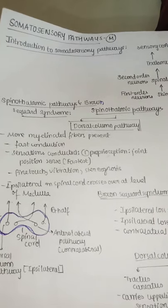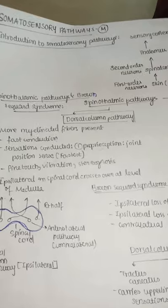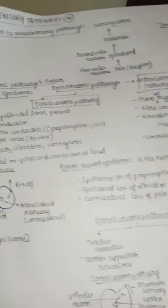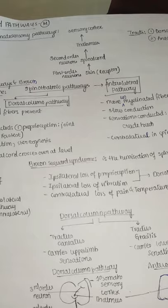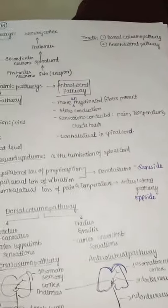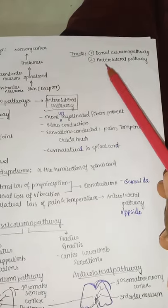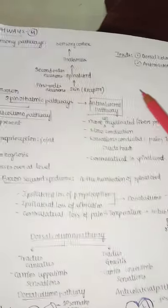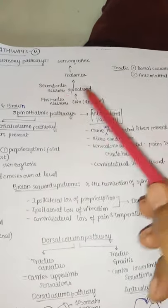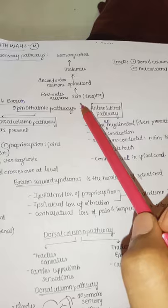Now let us continue with somatosensory pathways. We will discuss two pathways: the dorsal column pathway and the anterolateral pathway. Basic outline: skin receptors → first-order neuron → spinal cord → second-order neuron → thalamus → third-order neuron → sensory cortex.